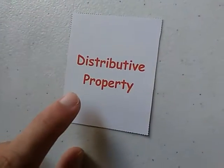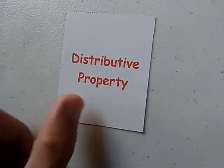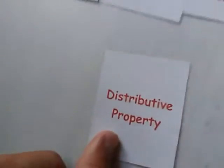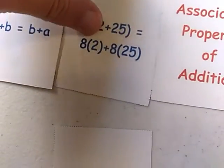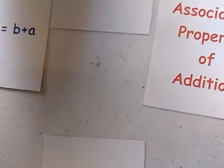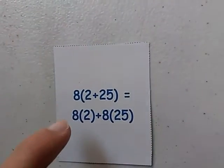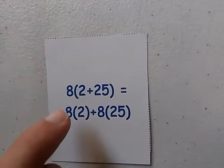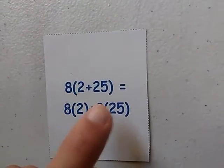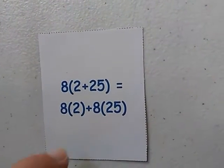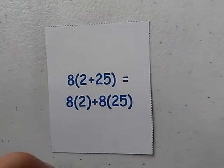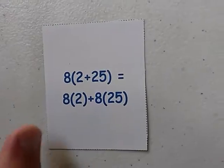Distributive Property. Yes, this is the Distributive Property because 2 plus 25 times 8 is the same as multiplying each of these numbers by 8 and adding them together.